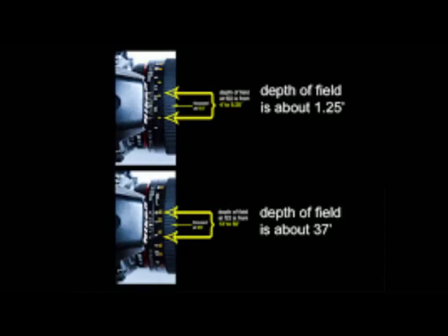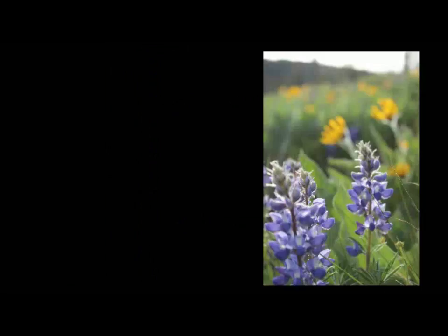This last slide compares the two — same lens, same F-stop, but focused closer. Your depth of field goes from 37 feet to just over one foot. When you're focusing on something that's close to you, you might want a little more depth of field to make sure you get it in focus. And if you're focusing on something further away, you might not need that aperture — you could use it in shutter speed instead.